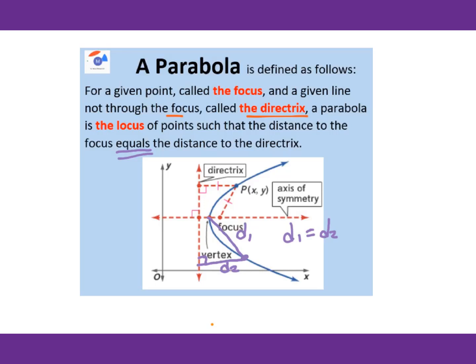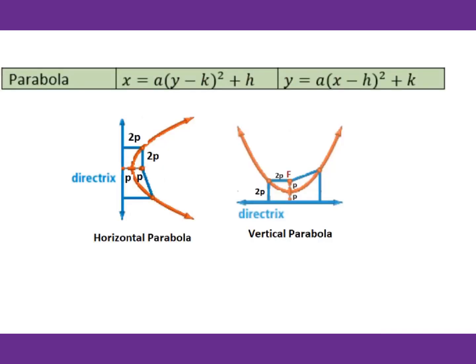The distance between the vertex and focus is labeled p. The distance from the vertex to the directrix is also p. Through the focus, if you draw parallel lines to the directrix, they intersect the parabola. According to the definition, that distance will be 2p.